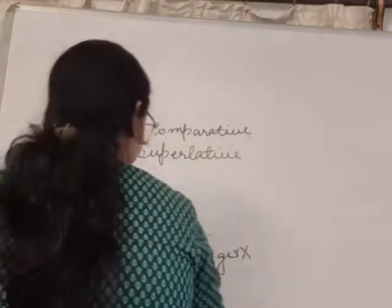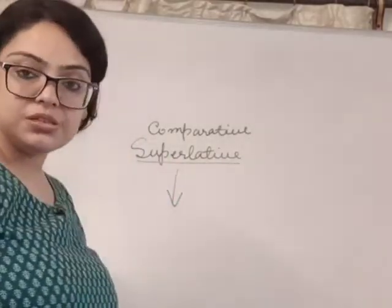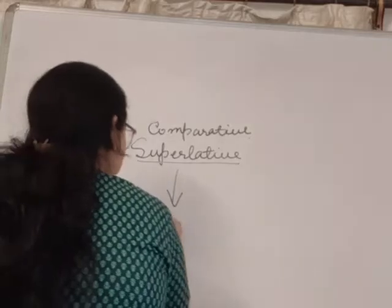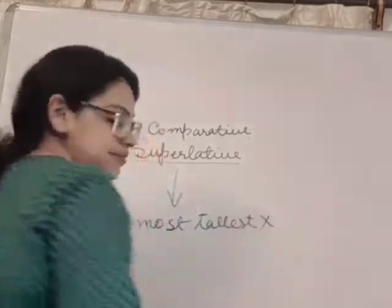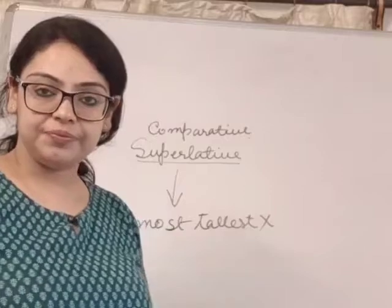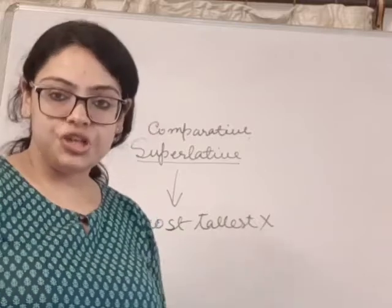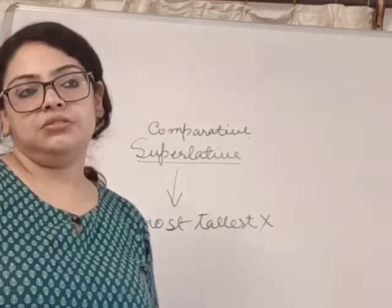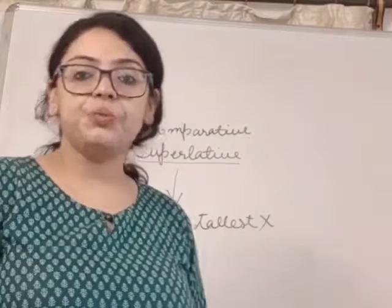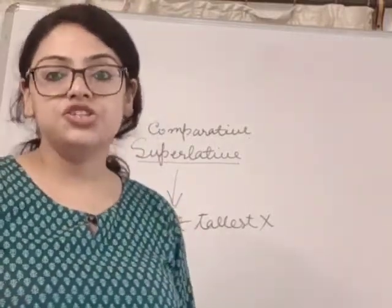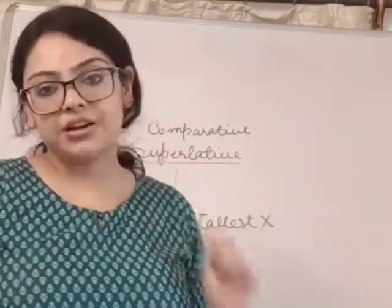In the superlative variety, we do not use 'most' with words that already have a superlative form. We do not say 'most tallest.' We simply say 'she is the tallest of the lot,' 'she is the smartest of them all,' 'she is the bravest,' 'she is the cutest of them all.' But if you are using words like 'courageous,' you say 'she is more courageous than her friends' or 'she is most courageous of them all.'